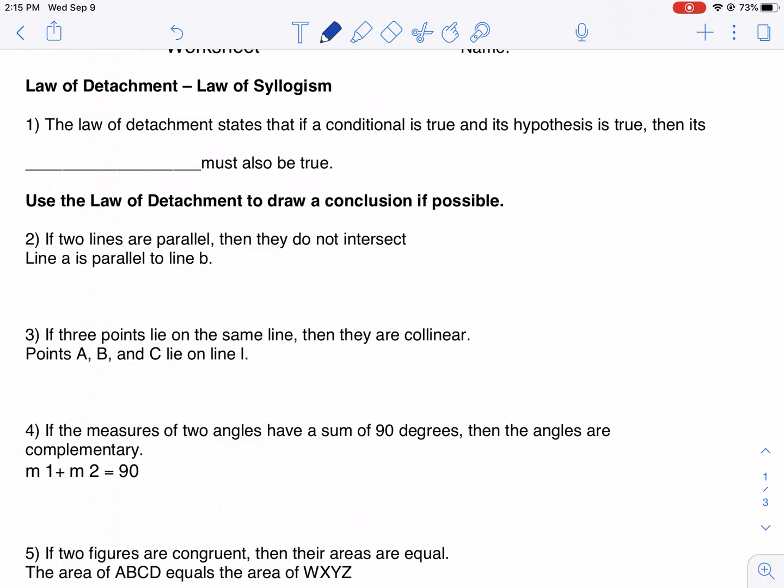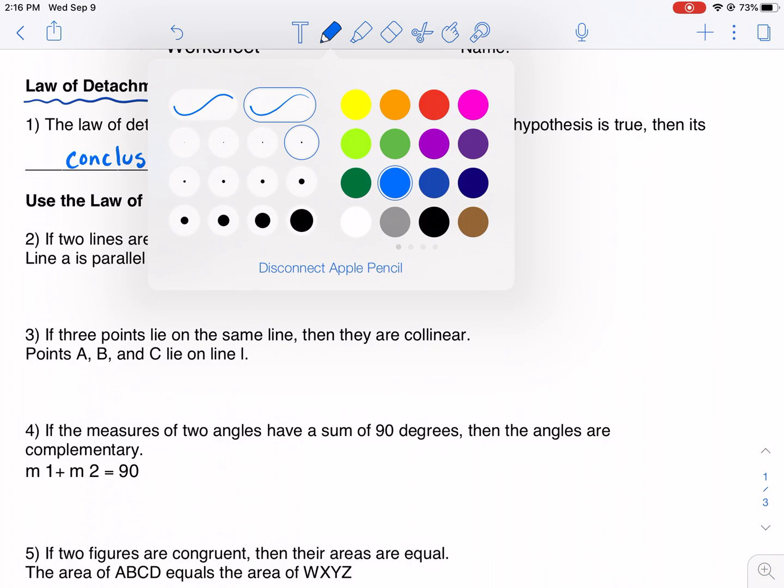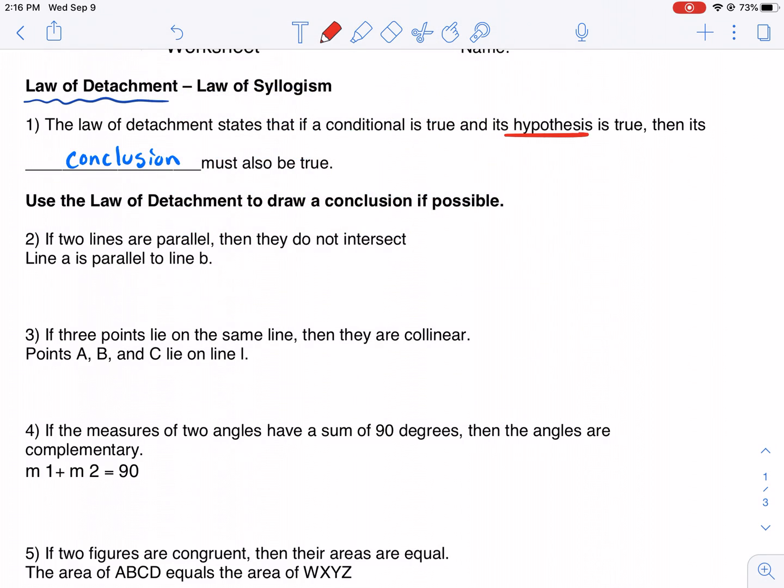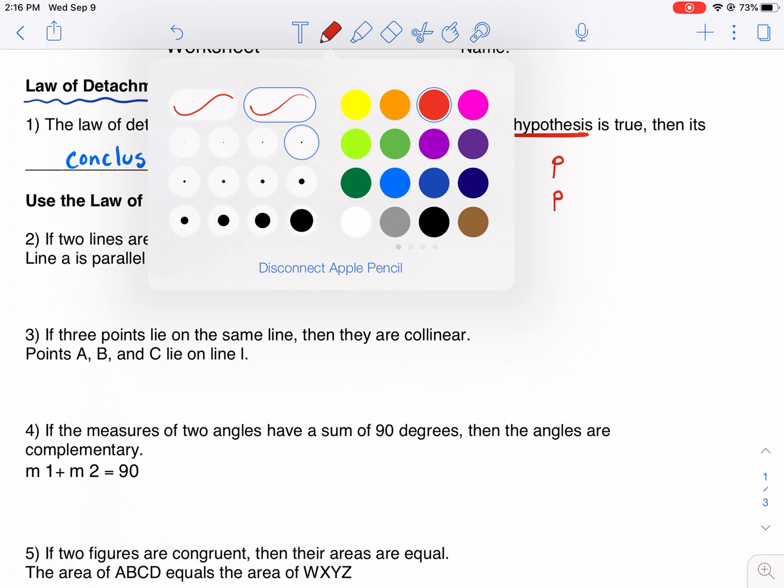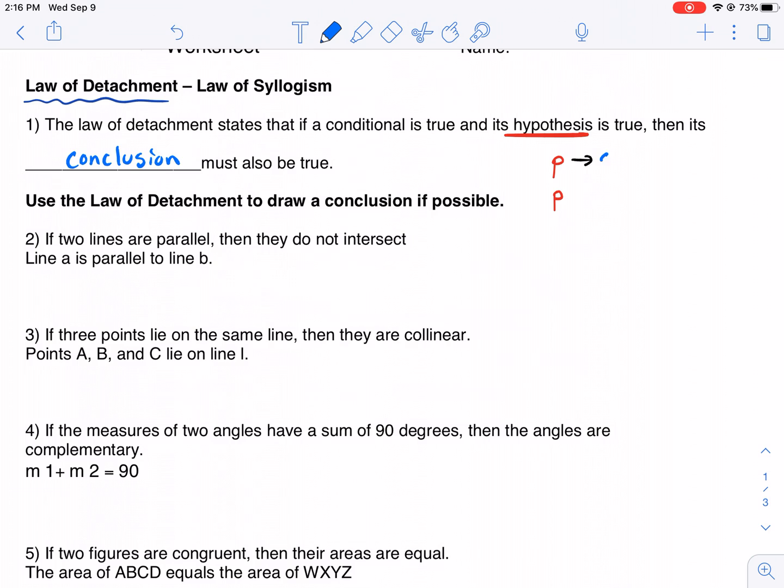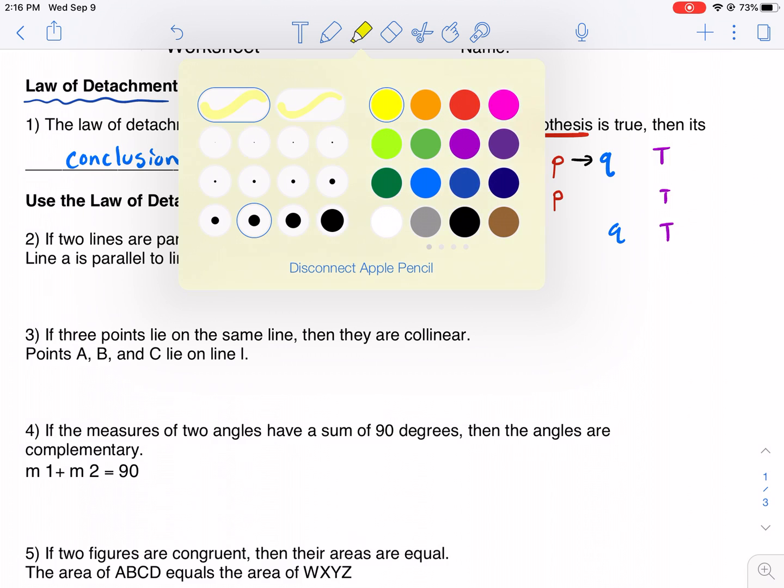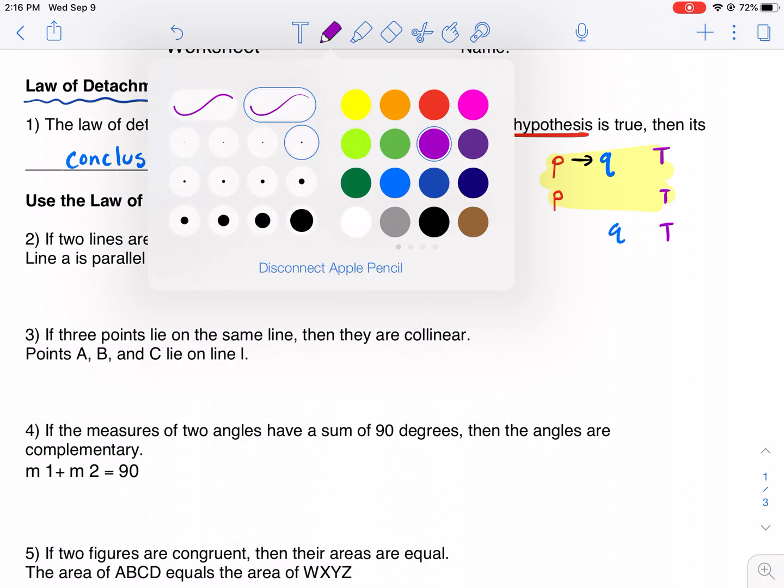Law of detachment, the law of syllogism. So this first part is we're going to talk about the law of detachment. Then syllogism is down below. The law of detachment states that if a conditional is true and its hypothesis is true, then its conclusion must also be true. So the hypothesis is red, conclusion in blue. And this essentially is what it's saying. If we have a true hypothesis and a true conditional, if that's true and the hypothesis is true, then we can form a true conclusion with that information. This is kind of like the prerequisite. We have to have this going on first before we get to this.